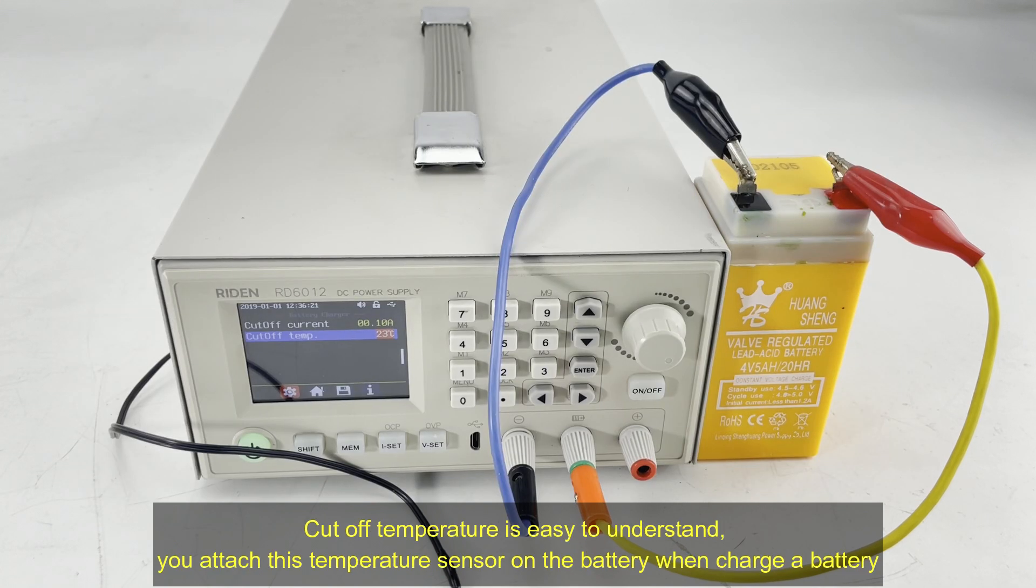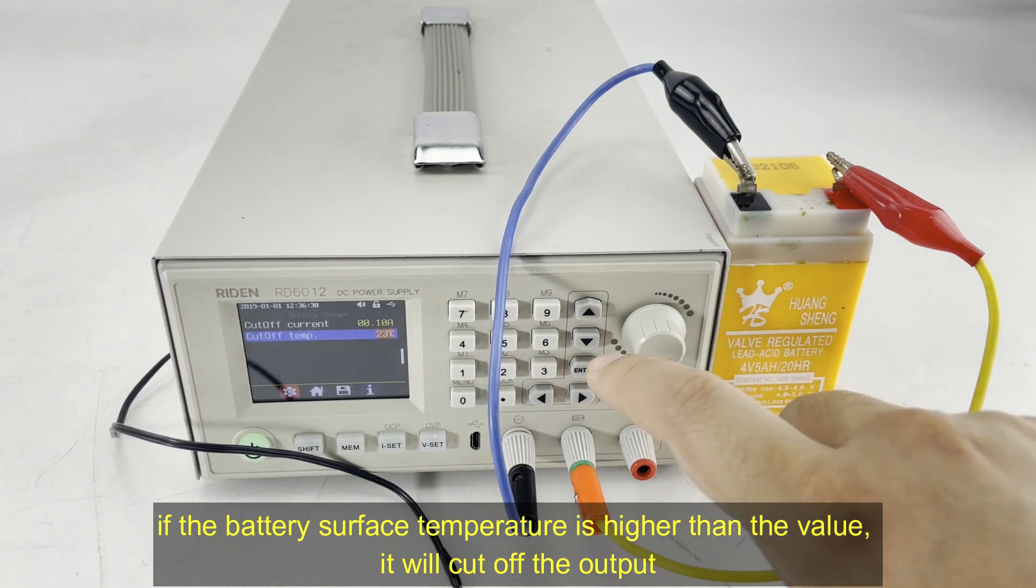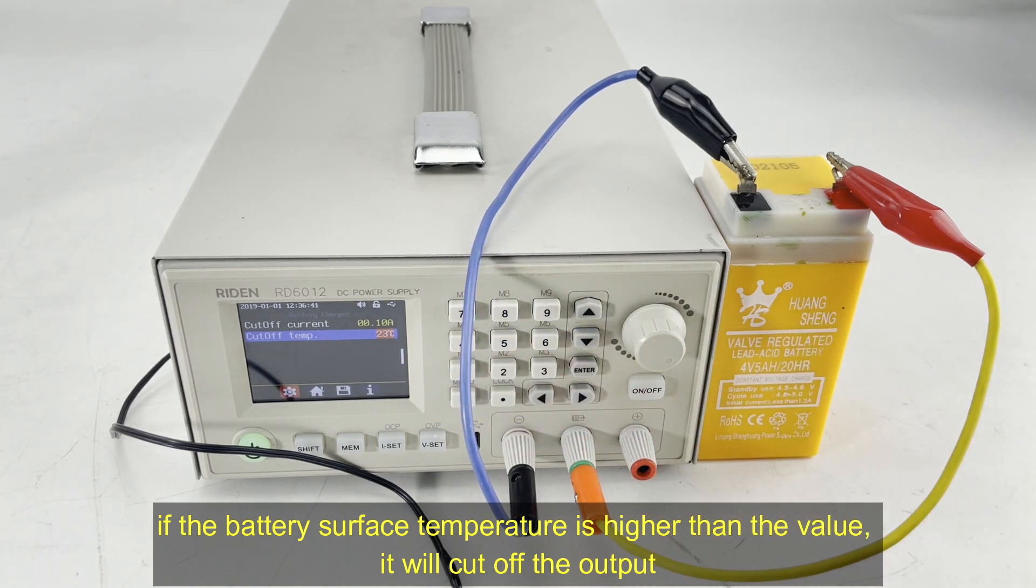Cut-off temperature is easy to understand. You attach this temperature sensor on the battery when you charge a battery. If the battery surface temperature is higher than the temperature you set, it will cut-off the output.